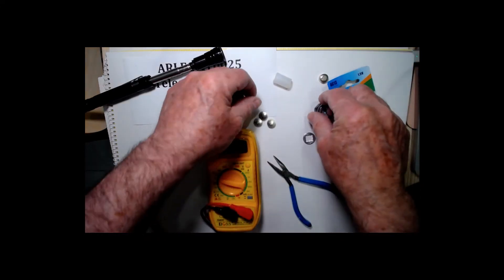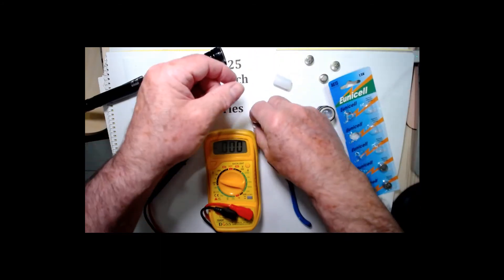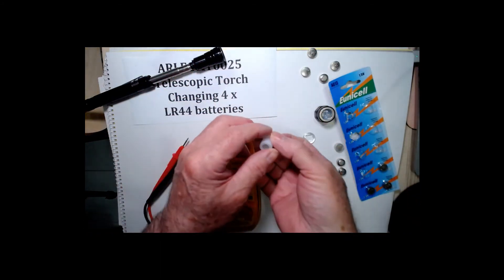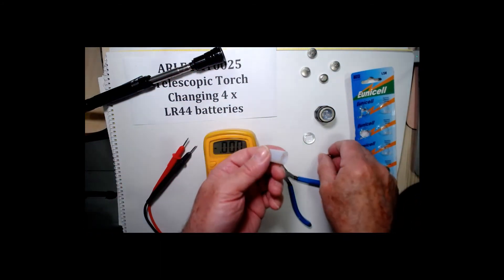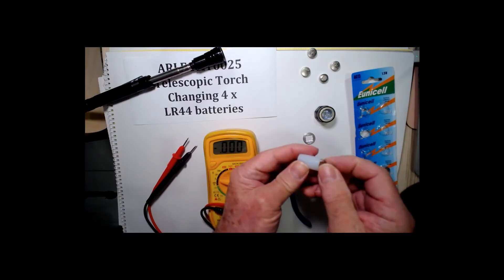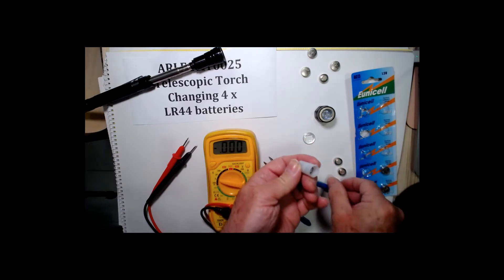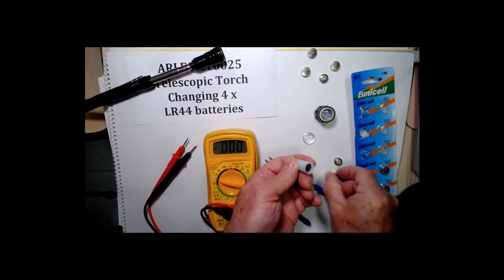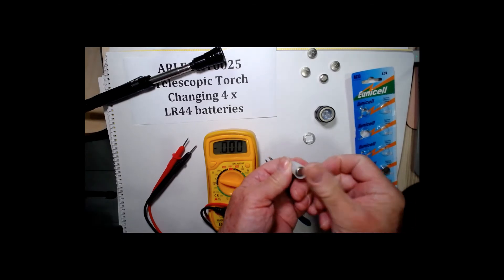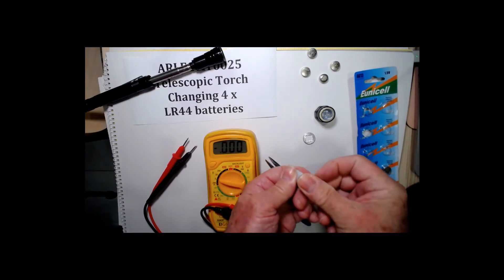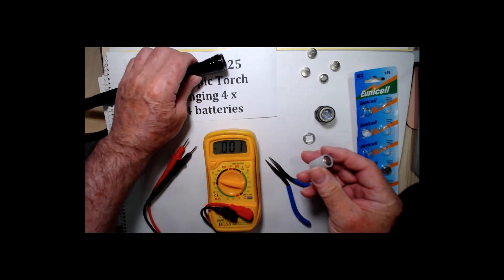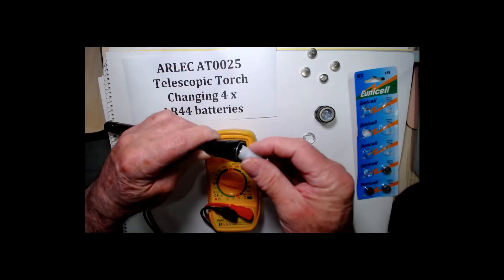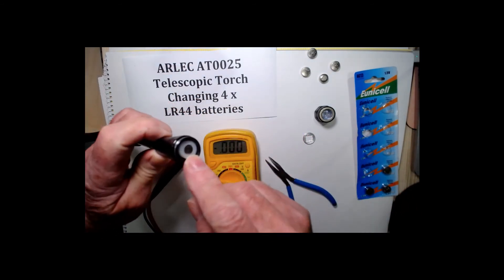So those are the old batteries. And there's the cartridge again so we'll load it up with the positive terminal towards this end and then they go back in the same way they came out of course, with the positive up top here.